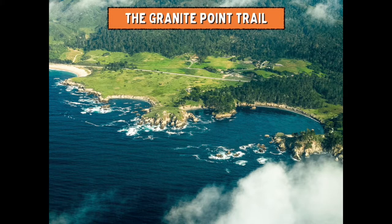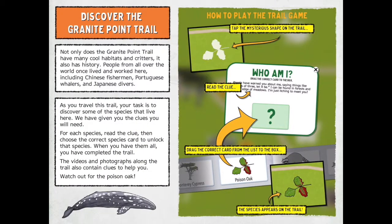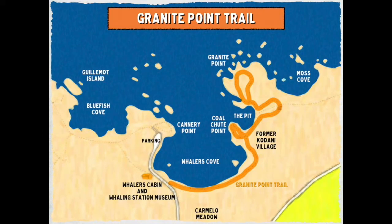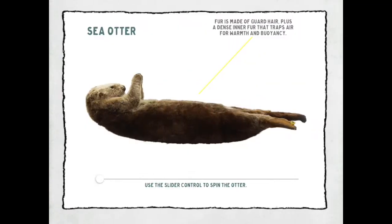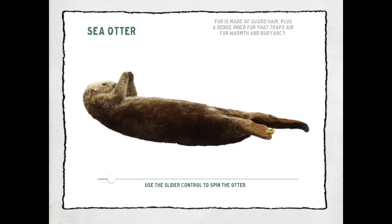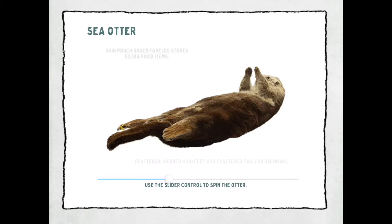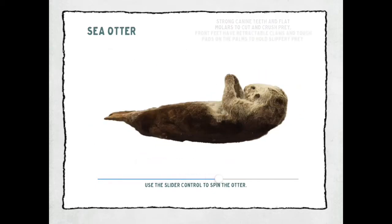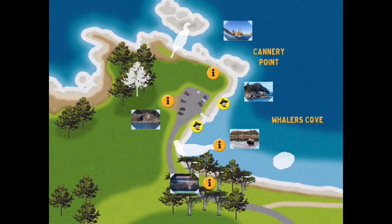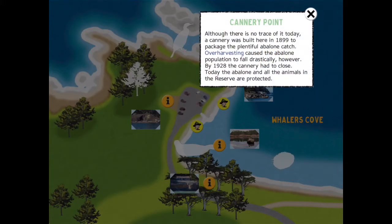Slide across and you'll see the first trail game — the Granite Point Trail. We have three trails selected to play along with the app. There's an overview, instructions on how to play, a close-up view of the actual trail, and things you might see. There's a sea otter that gives an explanation, and sliding across the bottom bar rotates the otter and brings up information as you go. Starting the trail game, we have eye icons which are informational items — clicking the top eye brings up information about Canary Point.